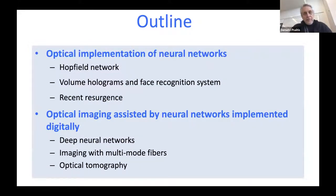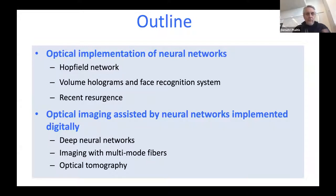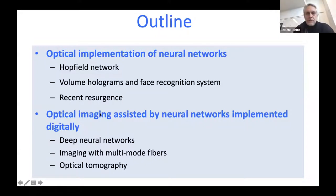The outline covers some older work using holograms to build neural networks, then the recent resurgence and his own work in this area, and finally work that is dominating the current field on combining neural networks and optics — specifically using neural networks to help optical imaging rather than implementing neural networks with optics.